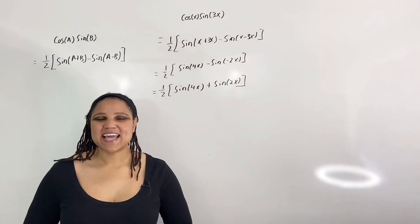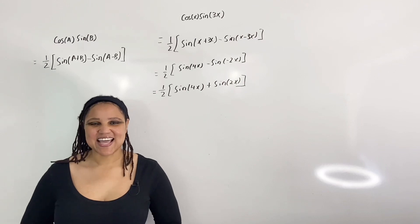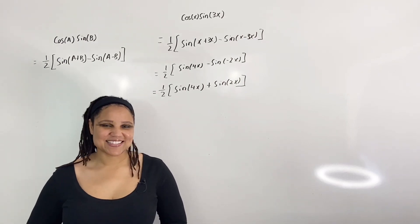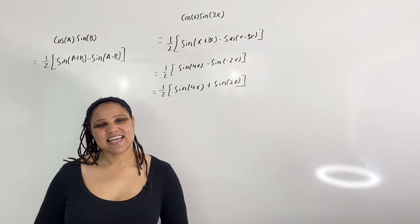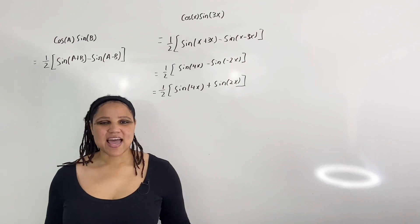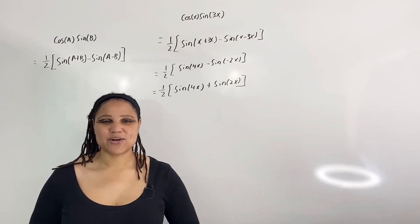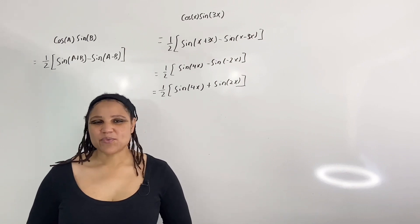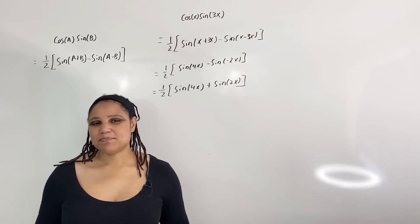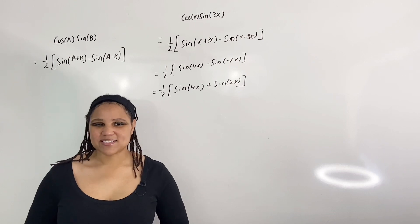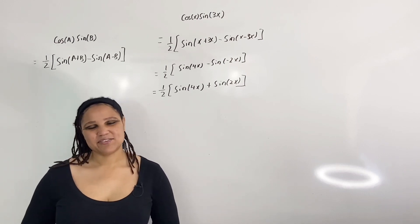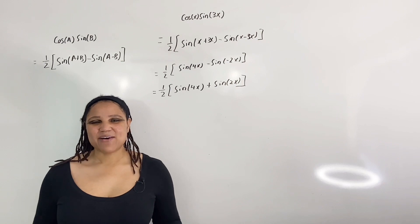The purpose of rewriting a product of cosine and sine as a sum is that in calculus, if you are asked to evaluate the integral of a product of cosine and sine, one way you can do so is by rewriting the product of cosine and sine as a sum of cosine and sine.